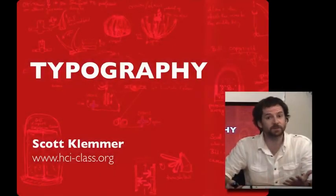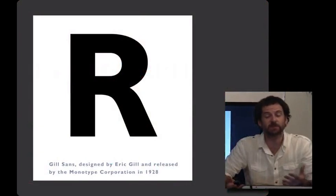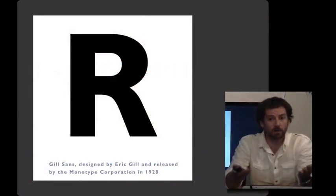Let's take a look at the atoms of visual design. Letter forms. This is the letter R, typeset in Gill Sans.